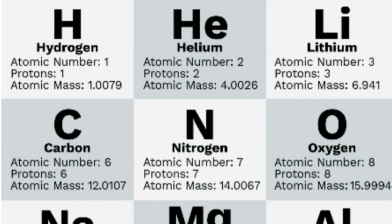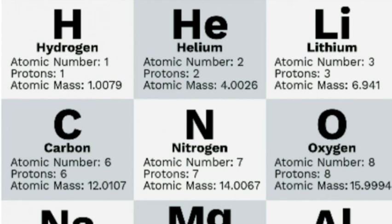We note the atomic number, symbol, and number of protons. The second element is helium — atomic number is equal to 2, number of protons is equal to 2, and atomic mass is equal to 4. Lithium has atomic number 3, protons number 3, and atomic mass equal to 6.